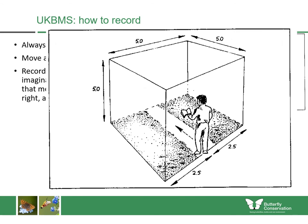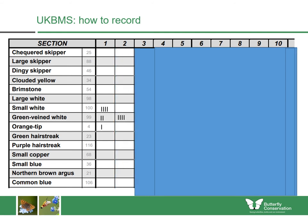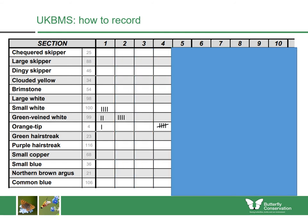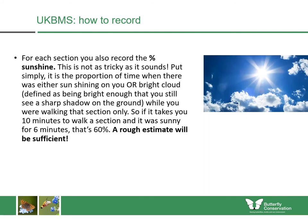The reason volunteers follow this method is so that everyone in the country uses the same approach, giving scientific rigor to the surveys. On your recording form, you make a tally of species seen in each section — for section one you might see four Small White, two Green-veined White, and an Orange-tip. Using a tally is useful because it lets you add more species as you go, continuing through sections two, three, four, and so on. Each transect has different numbers of sections, so it might have fewer than ten.